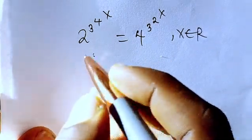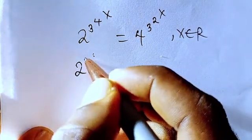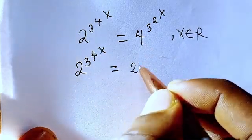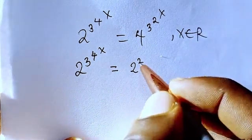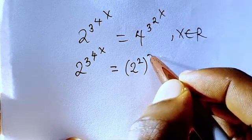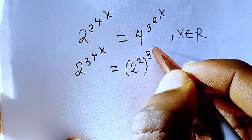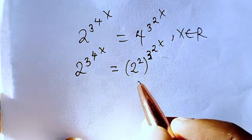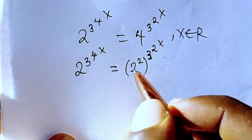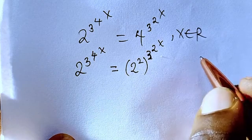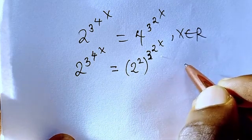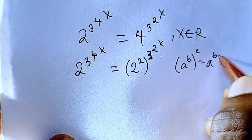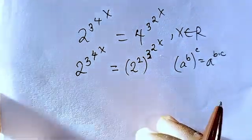I'm going to rewrite this equation. On the left we have 2 to the power of 3 to the power of 4 to the power of x. On the right-hand side, 4 can be written as 2 to the power of 2, then raised to the power of x. Now, from the law of exponents: when you have a to the power of b to the power of c, this equals a to the power of b times c.